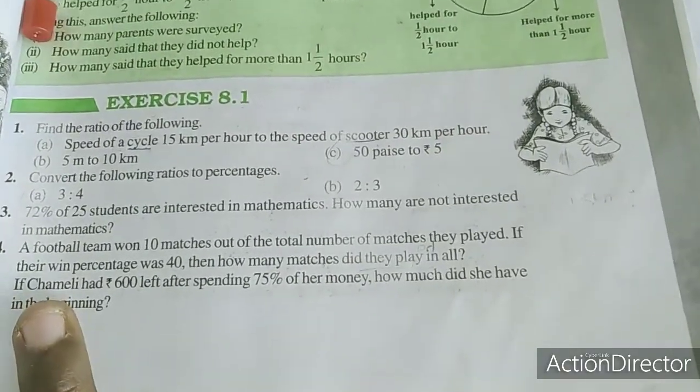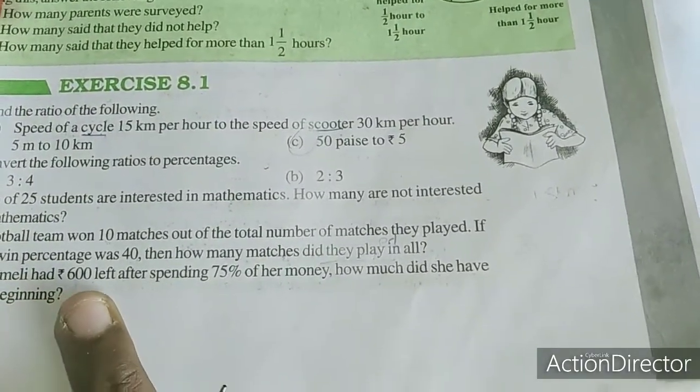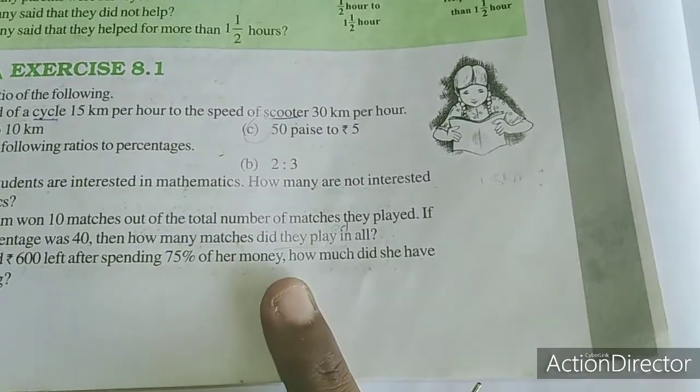Fifth sum: Chamili had 600 left after spending 70% of money.